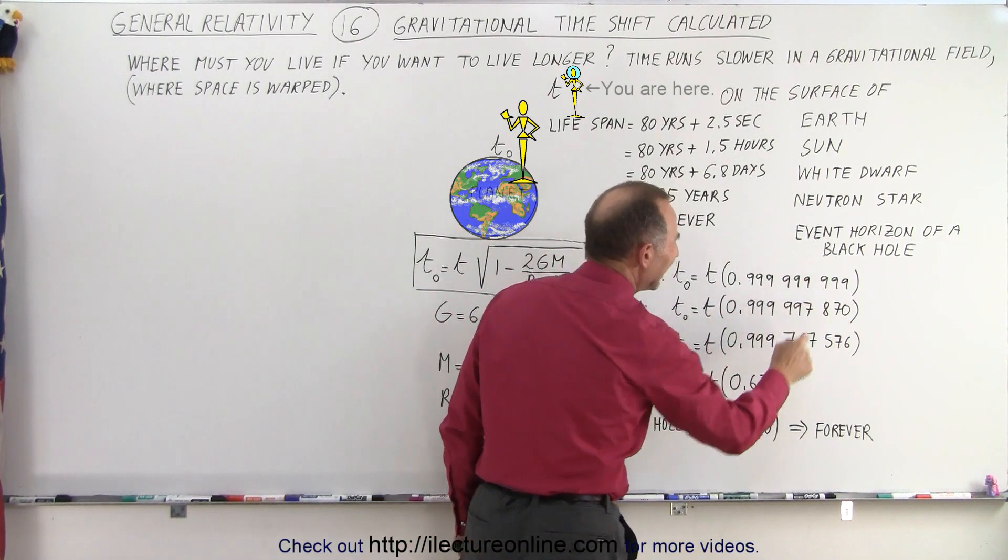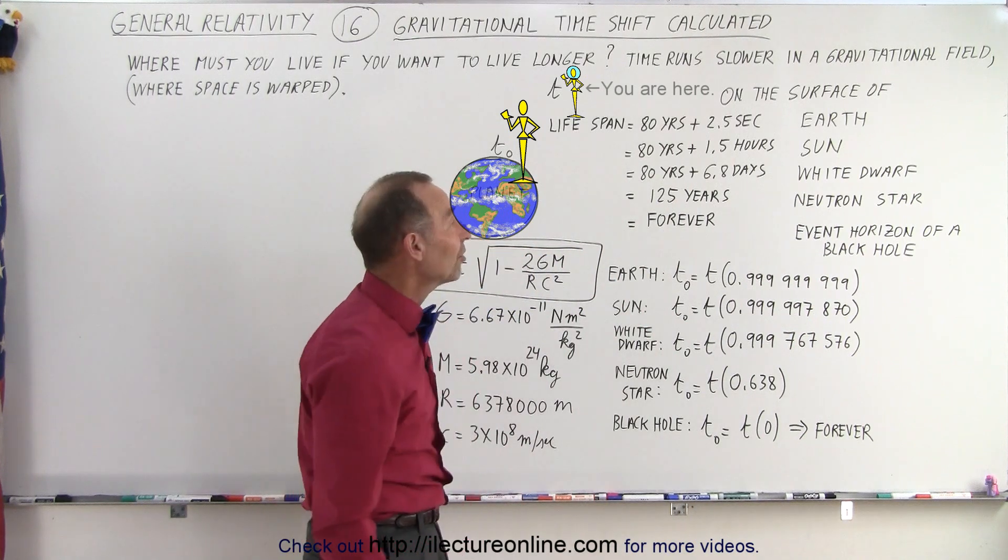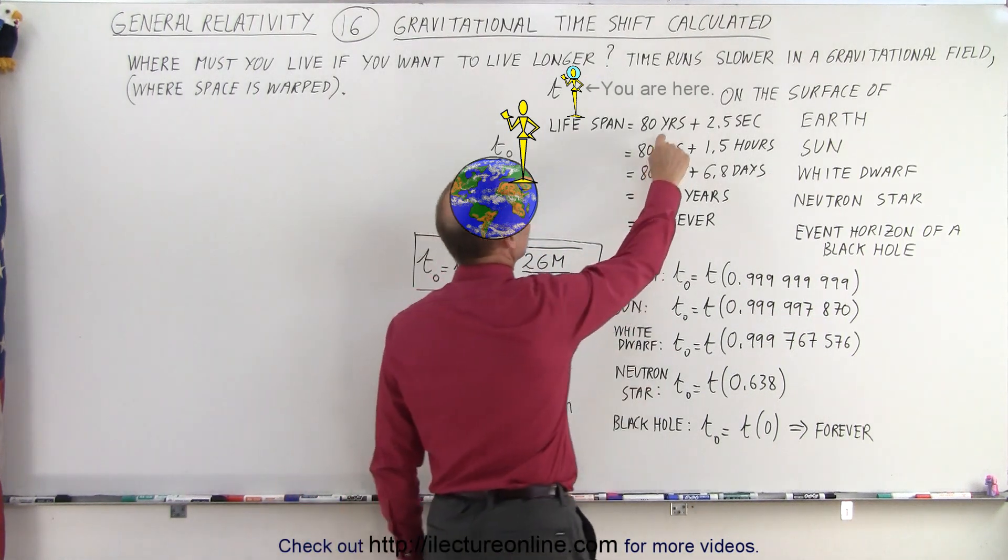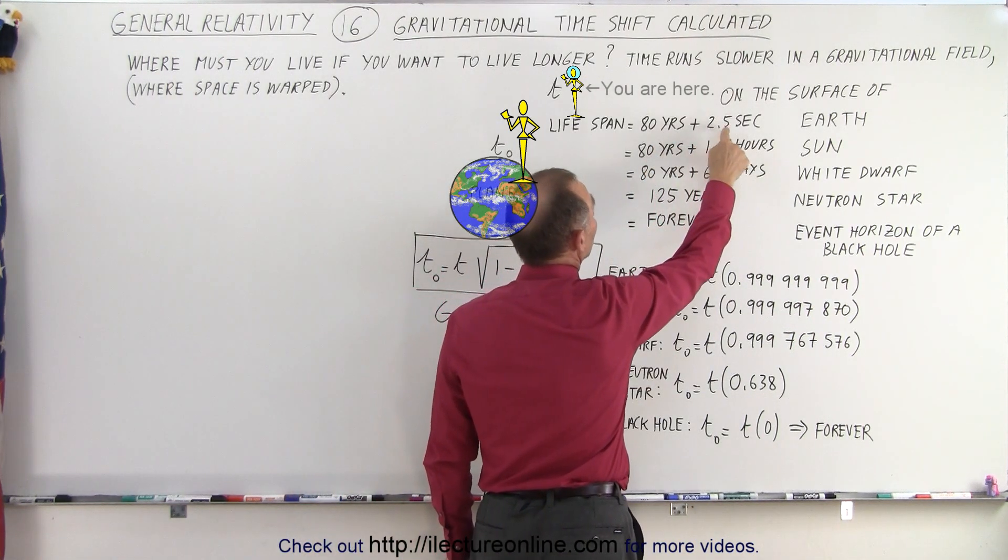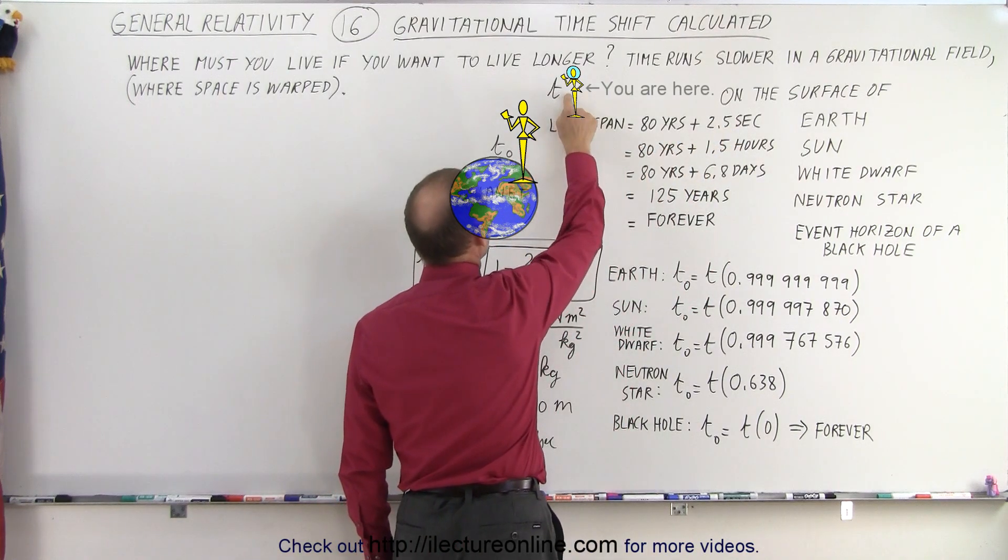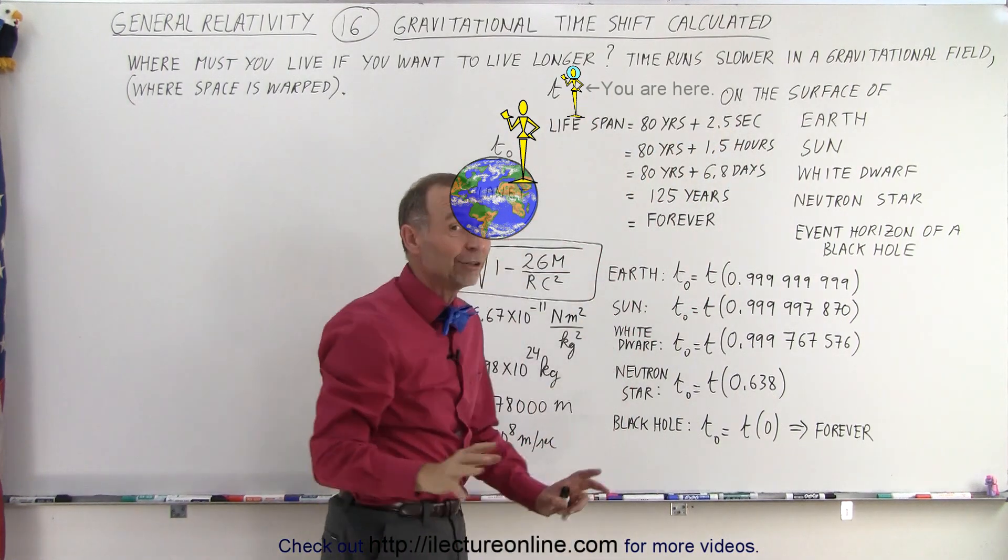But for the Earth, you can see there's a very little bit of a difference, very small, only one in a billion difference in the time, which means that in an 80-year span, you live two and a half seconds longer if you're on the surface of the Earth versus up in space, provided, of course,